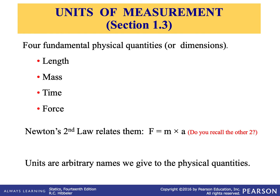Newton's first law states: a particle originally at rest or moving in a straight line with constant velocity tends to remain in this state, provided the particle is not subjected to any unbalanced forces — that is, the summation of all forces equals zero, giving a balanced system. Newton's second law states that a particle acted upon by an unbalanced force F experiences an acceleration A that has the same direction as the force and a magnitude directly proportional to the force — that's F equals mass times acceleration. The third law states the mutual forces of action and reaction between two particles are equal, opposite, and collinear.